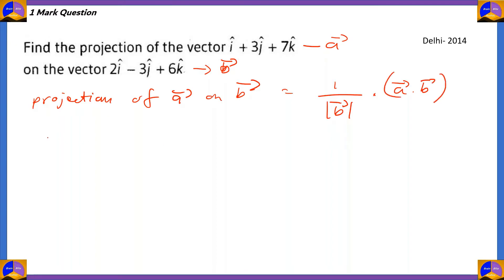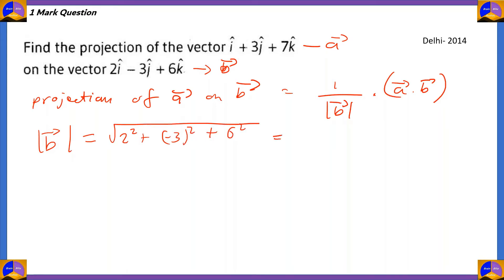Modulus of vector b will be equal to the square root of the sum of the squares of the components of vector b. So √(2² + (−3)² + 6²) = √(4 + 9 + 36) = √49 = 7.